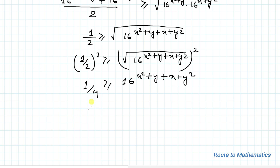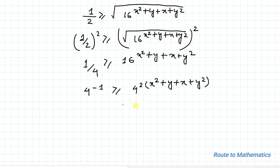We can write 1/4 as 4 to the power of negative 1, which is greater than or equal to 16 written as 4 squared, multiplied with x² + y + x + y². As both sides have the same base, we can equate the powers. So we write 2 multiplied with x² + y + x + y² less than or equal to negative 1.